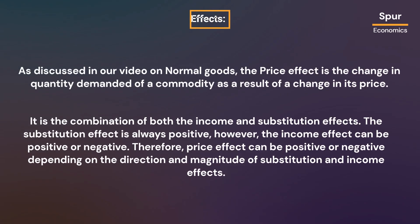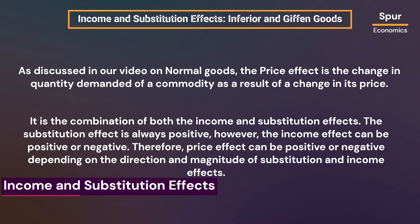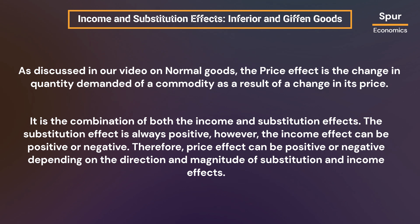As discussed in our video on normal goods, the price effect is the change in quantity demanded of a commodity as a result of a change in its price. This price effect is the combination of both the income and substitution effects. The substitution effect is always positive; however, the income effect can be positive or negative. Therefore, the price effect can be positive or negative depending on the direction and magnitude of both substitution and income effects.